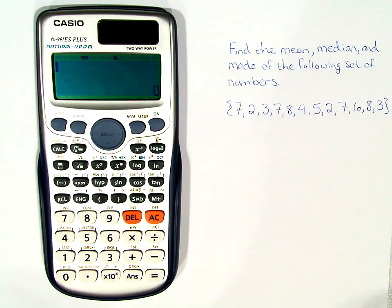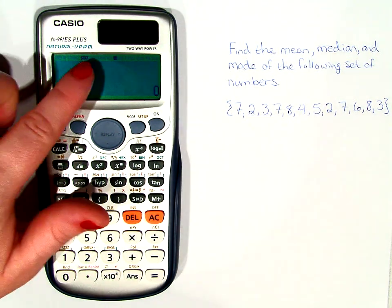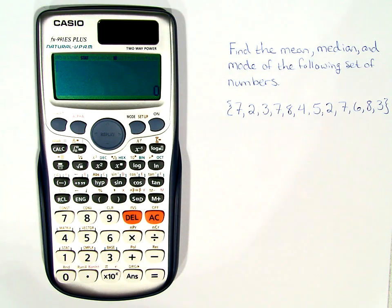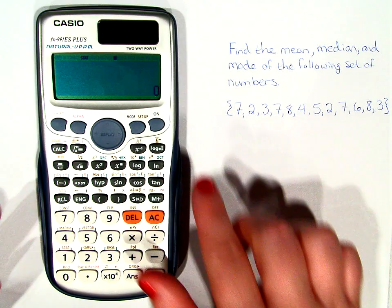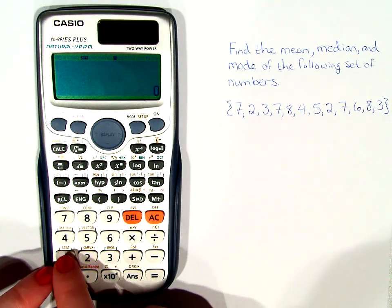Once we have our calculator set up, remember it should be on stat and the frequency should be on, we need to tell the calculator exactly what we want it to do. Before we can tell it what we want it to do, we need to give it data. Now, if you look on the calculator, you should see a stat just above the 1.